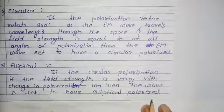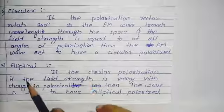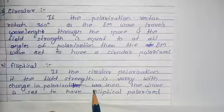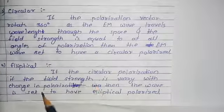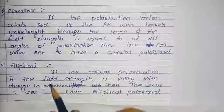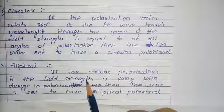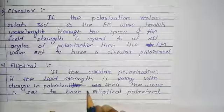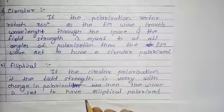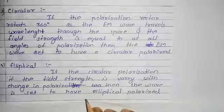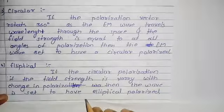The last type is elliptical polarization. If the field strength varies with change in polarization angle, then the polarization is called elliptical polarization. These are the four types of polarization, and today's topic has ended. We will see the next topic in the next lecture.